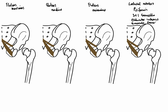Starting with gluteus maximus: it originates from the posterior surface of the ilium, the posterior surface of the sacrum, and from the sacrotuberous ligament and parts of the ischial tuberosity. Most of its fibers pass down towards the iliotibial tract, an important fascial layer that helps to stabilize the knee joint. The gluteus maximus fibers insert onto this iliotibial tract.